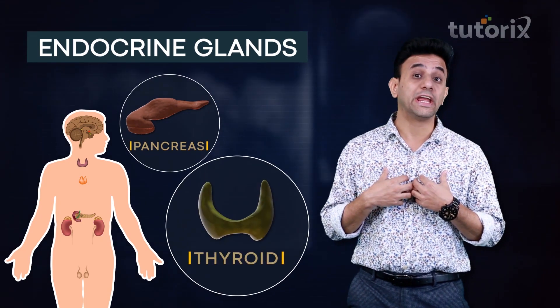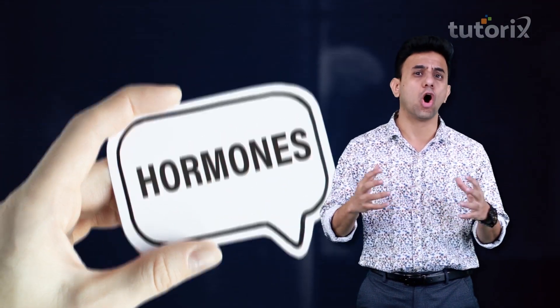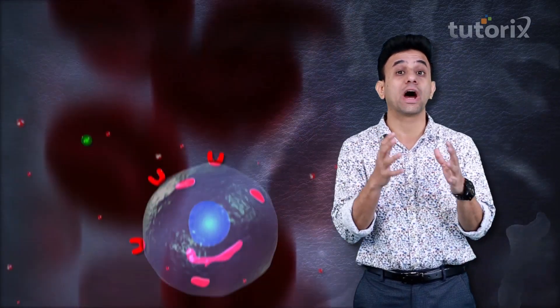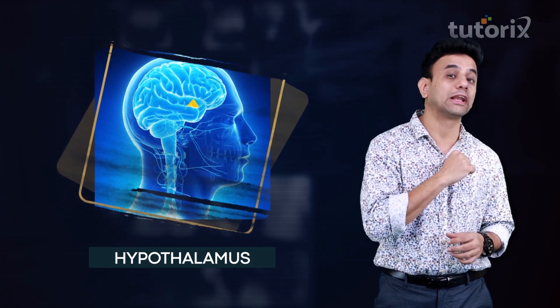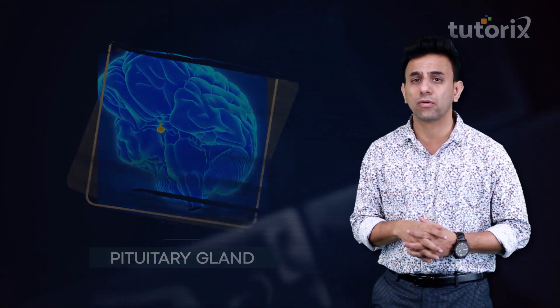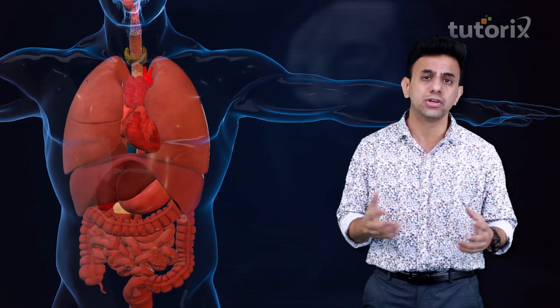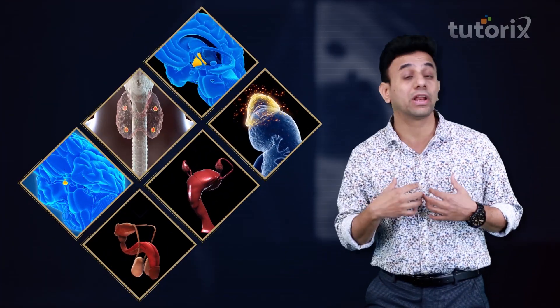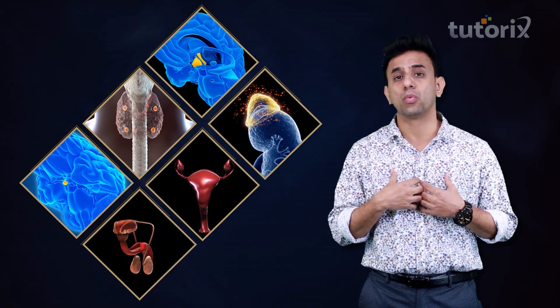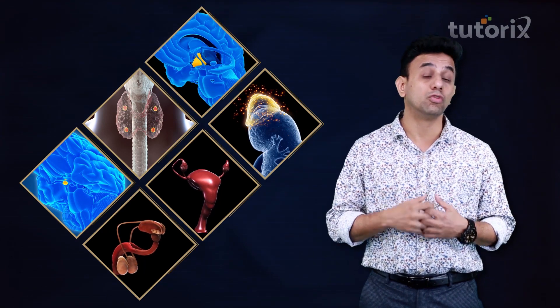The endocrine glands are important organs in our body and these produce hormones. The hormones circulate in our blood and strike the target tissues where they produce the desired results. We have many endocrine glands in our body — the hypothalamus, which is the master endocrine gland, the pituitary, the thyroid, parathyroid, and others. The functioning of all endocrine glands is very important as without them our day-to-day life would be severely affected.